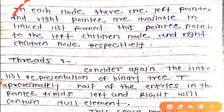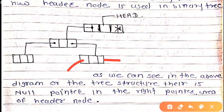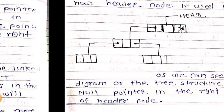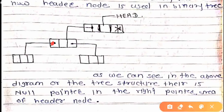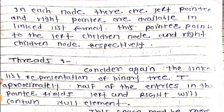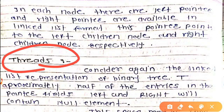In each node there are left pointer and right pointer. As you can see on screen, every node has a left and a right pointer. These pointers are available in the linked list format. The left pointer points to the left child node and the right pointer points to the right child node respectively.